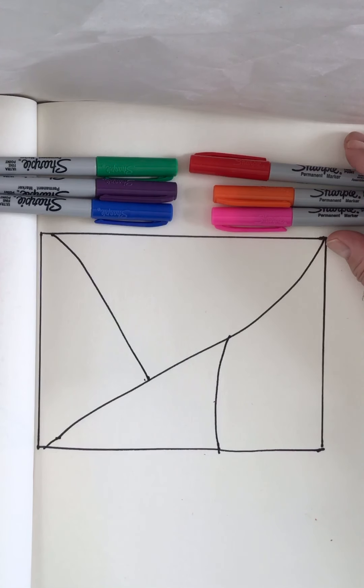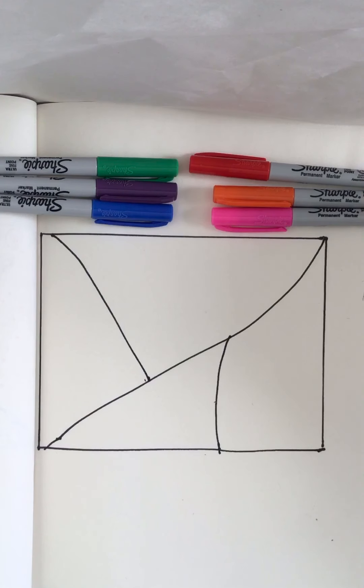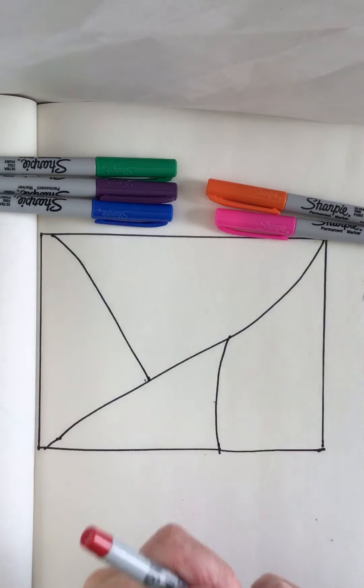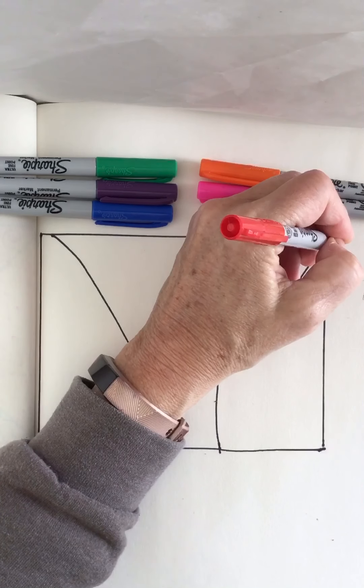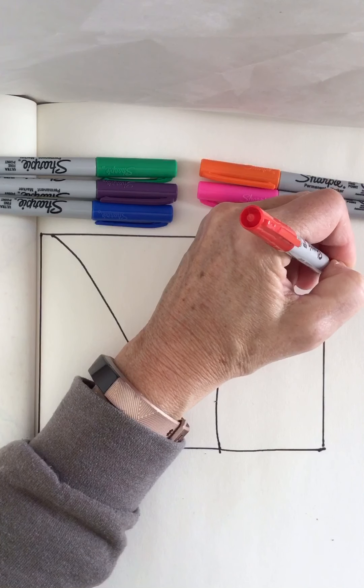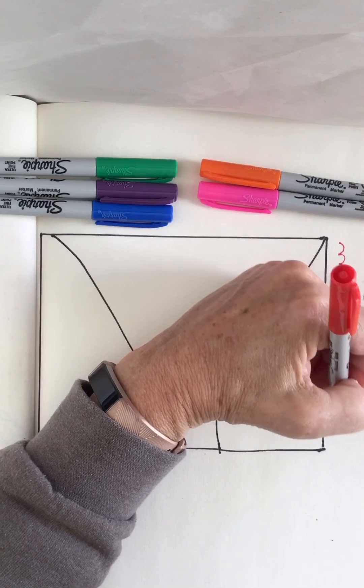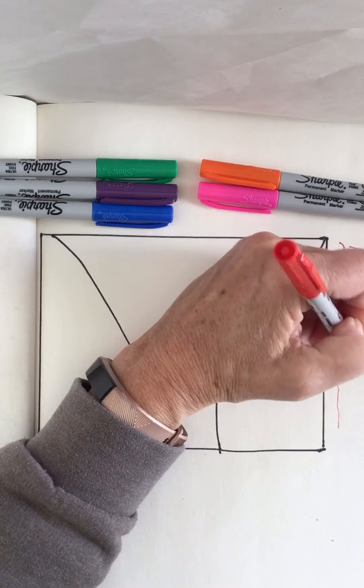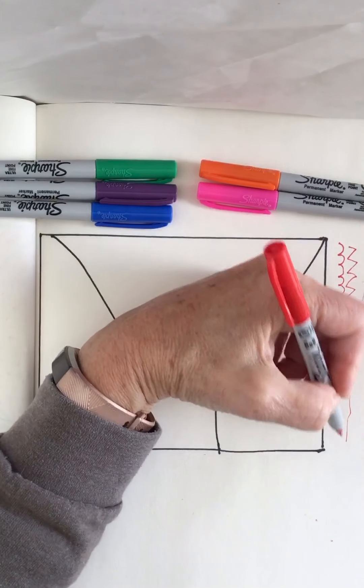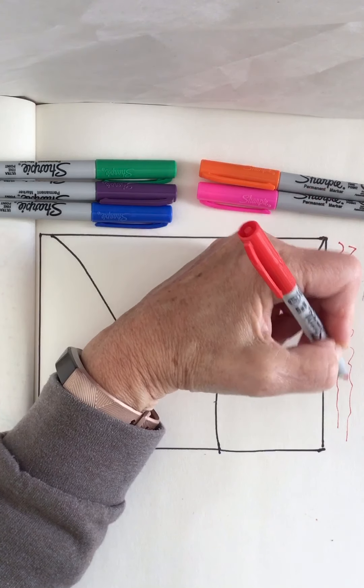So you choose what colors you want to use. Try to use two of each. And let's have some fun with this. Now the important thing to remember when you're drawing patterns is repeat and neat. You want to repeat a pattern. But you also want it to be neat.